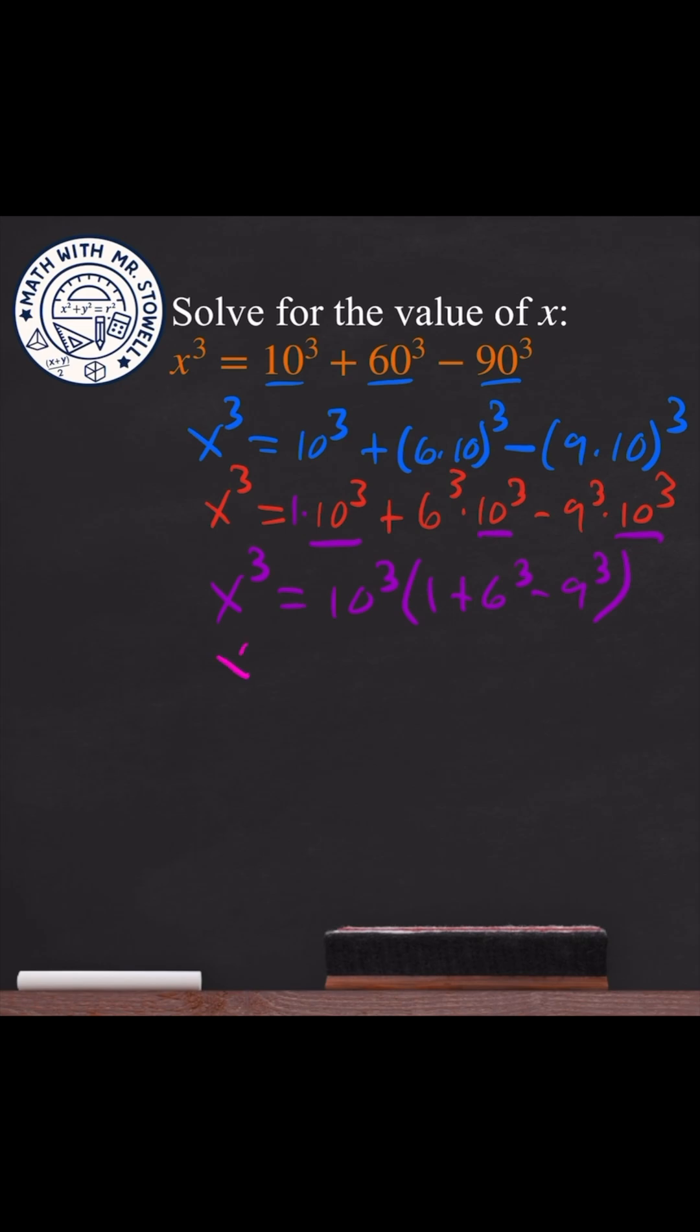Let's compute each cube. We get x³ = 10³ × (1 + 216 - 729).